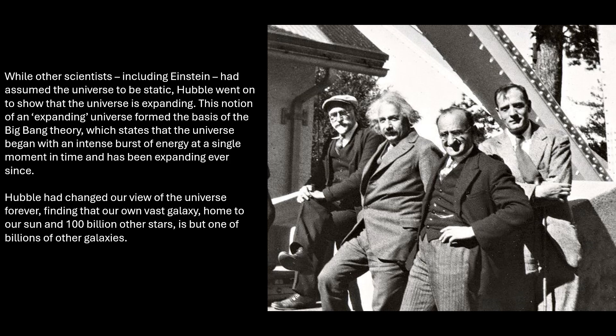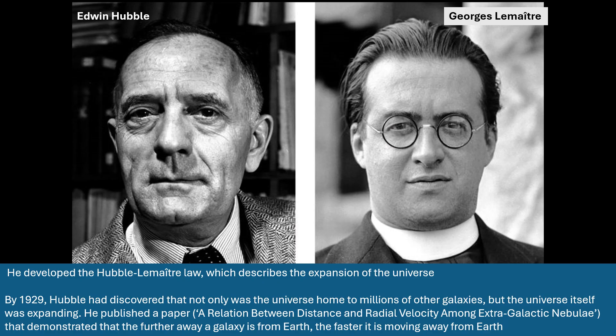Hubble had changed our view of the universe forever, finding that our own vast galaxy — home to our Sun and a hundred billion other stars — is but one of a billion other galaxies. Edwin Hubble developed the Hubble-Lemaître law, which describes the expansion of the universe. Georges Lemaître was a Belgian priest who, using Einstein's equations, also predicted that the universe should be expanding before Edwin Hubble. By 1929, Hubble published a paper, A Relation Between Distance and Radial Velocity Among Extragalactic Nebulae, demonstrating that the further away the galaxy was from Earth, the faster it was moving away.